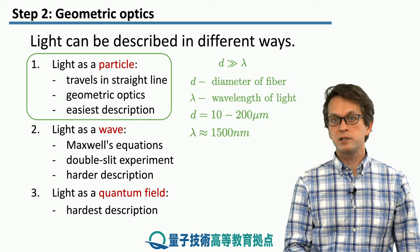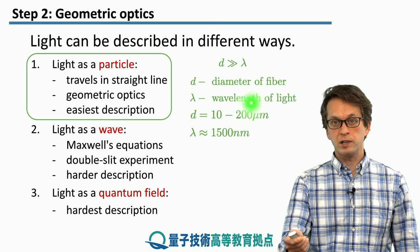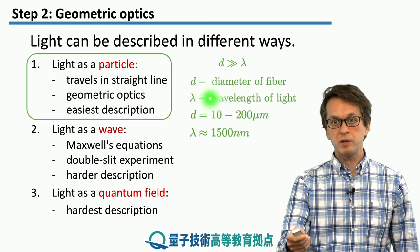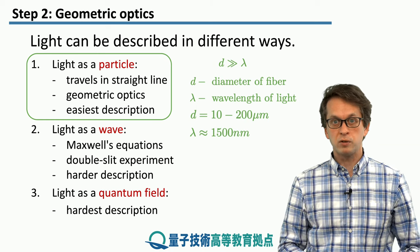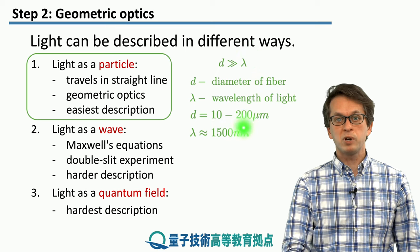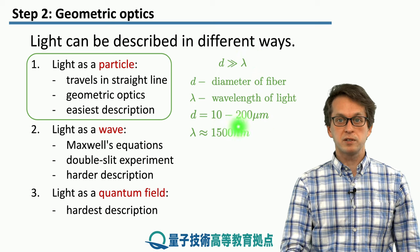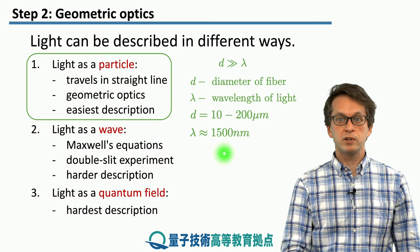Mainly, we will consider the diameter of the fiber to be much larger than the wavelength of the light. So here d is the diameter of the fiber and λ is the wavelength of light. To give you some ballpark numbers, d varies from 10 to 200 micrometers, whereas the wavelength of light is around 1500 nanometers.